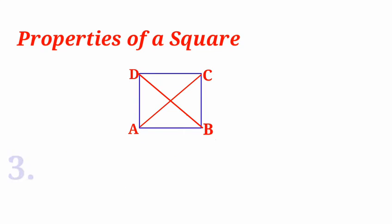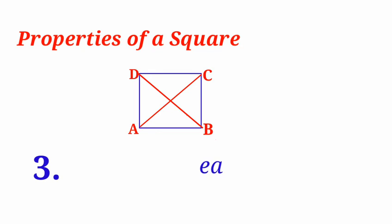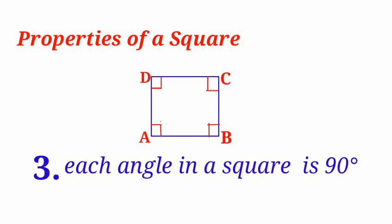Third property: each angle in a square is 90 degrees. That is, angle A equals 90 degrees, angle B equals 90 degrees, and angles C and D also equal 90 degrees.